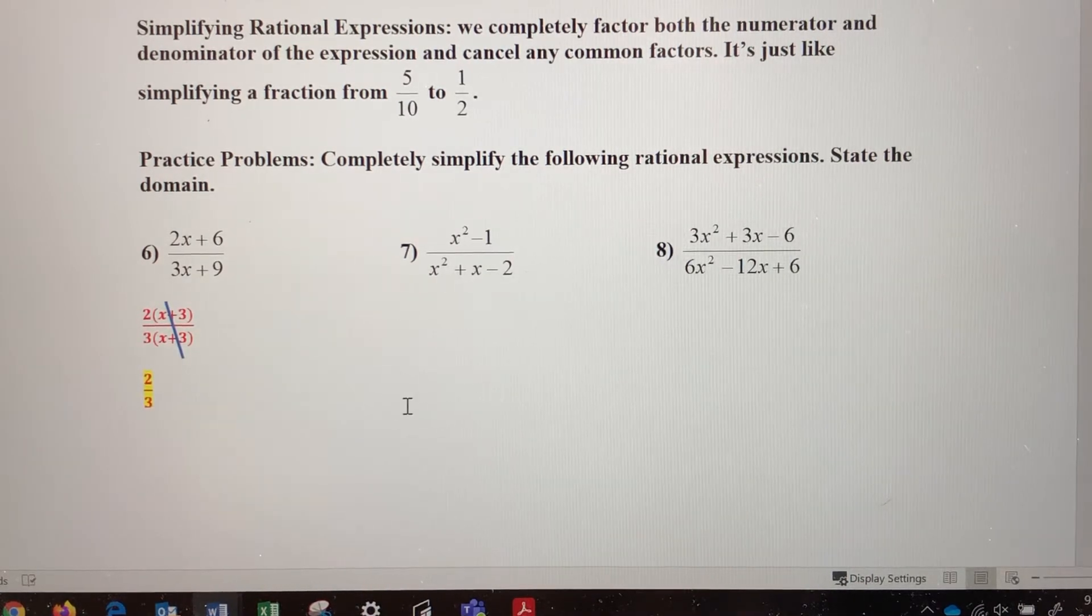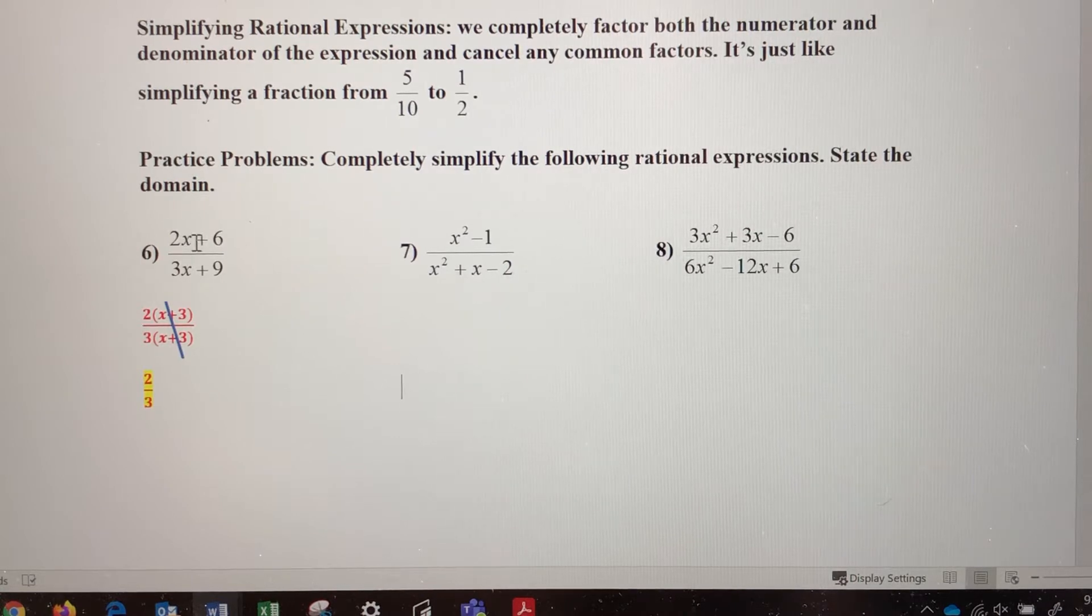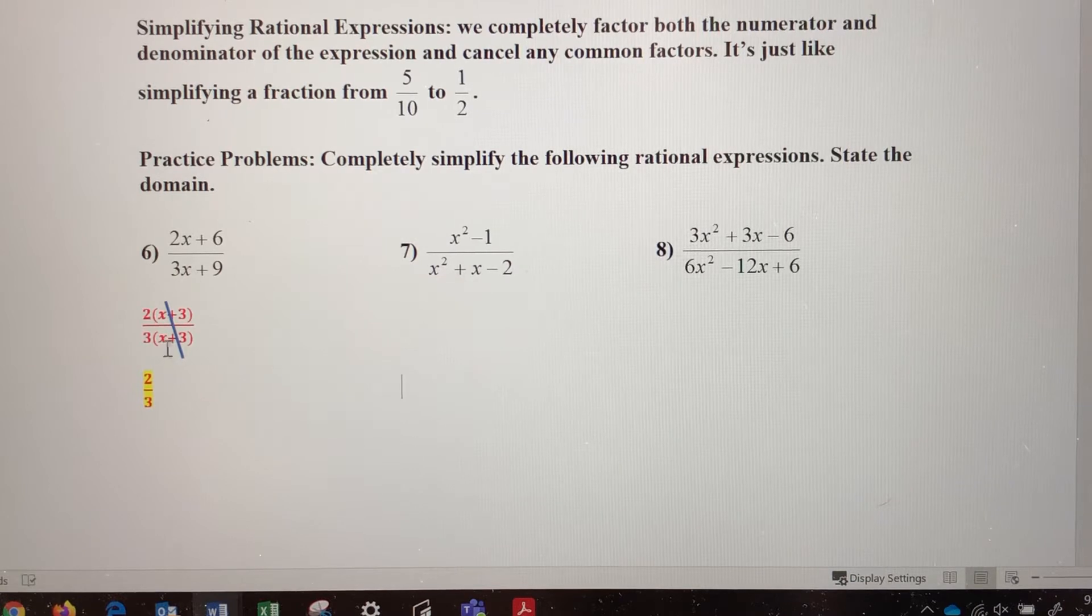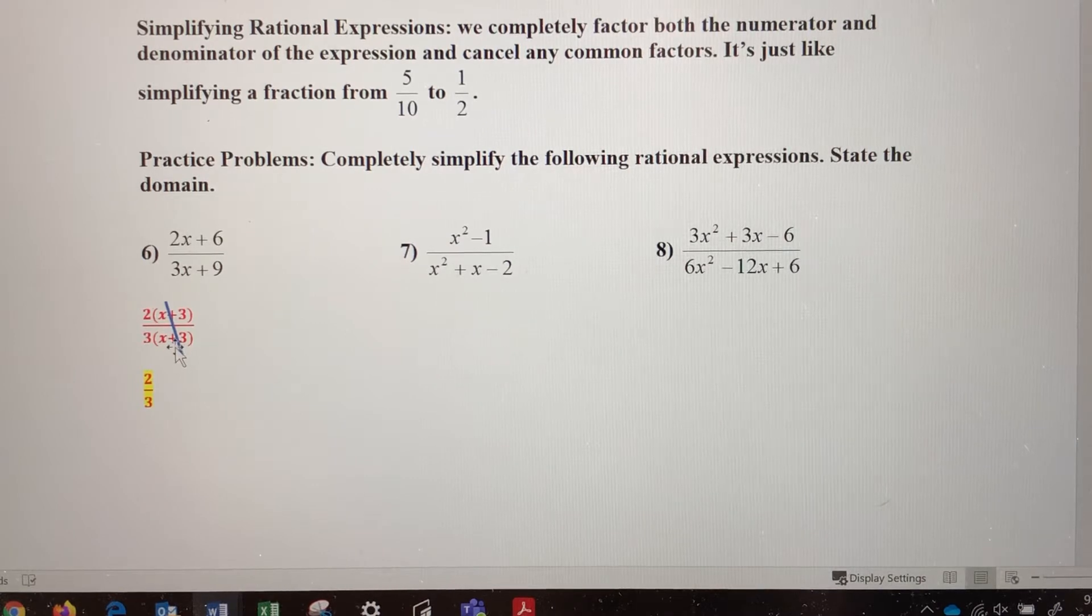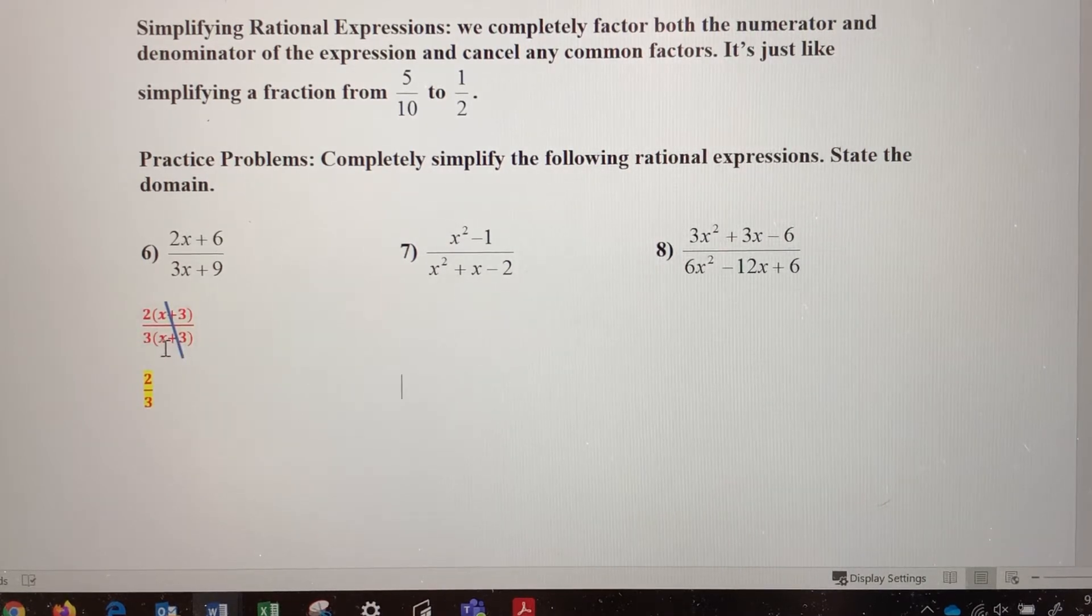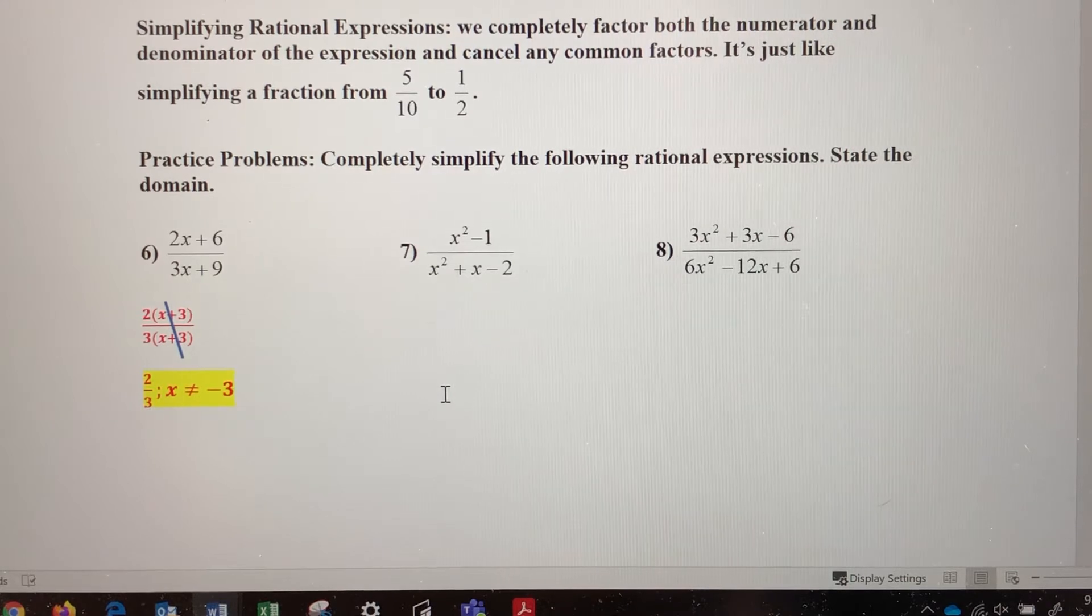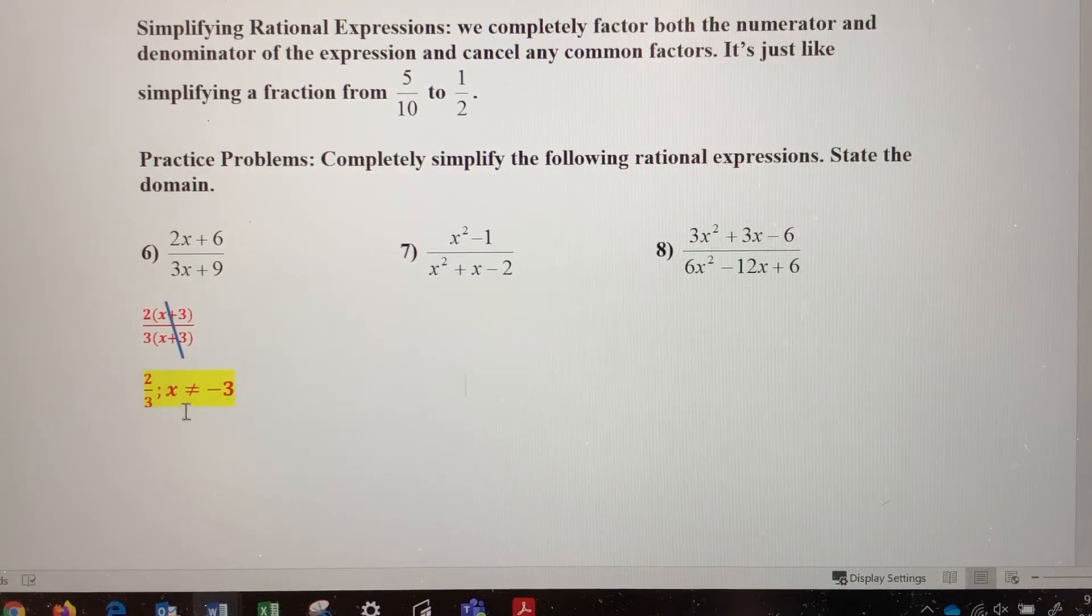So now we want to talk about the domain. If at any time the denominator could become 0, from the beginning step to the final step, we need to account for that in our domain. So the denominator can only be 0 if this factor x plus 3 equals 0. So that means negative 3 would make that factor 0 from our previous video. So negative 3 needs to be eliminated from our domain. So 2 thirds, as long as x does not equal negative 3.